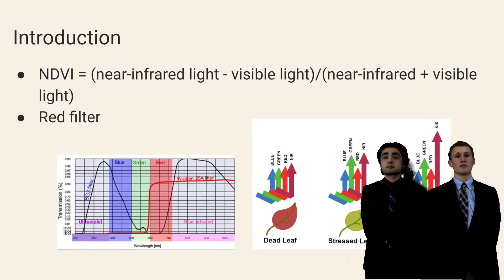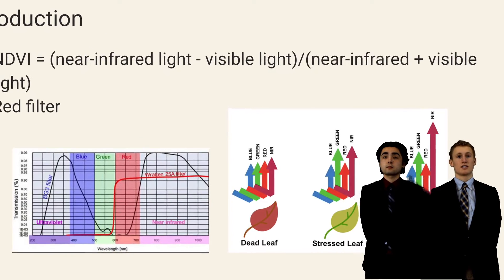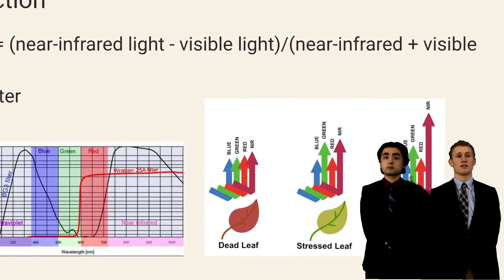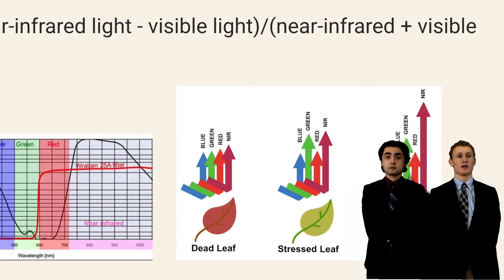Multi-spectral cameras are used to image vegetation in both visible and near-infrared wavelengths. Seeing the infrared light spectrum is important because healthy plants reflect more near-infrared light due to higher levels of chlorophyll.